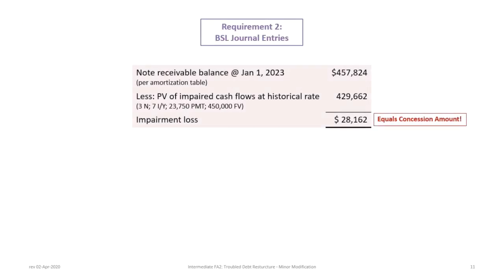Before recording journal entries, we must determine the impairment loss. The note receivable balance on BSL's books at January 1st, 2023 is $457,824 — the same as Flockhart's note payable balance. We calculate the present value of the impaired cash flows at the historical rate: 3N, seven percent, payment of $23,750, future value of $450,000, giving $429,662. The impairment loss equals the concession amount of $28,162, which should not be a surprise.